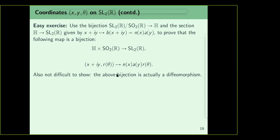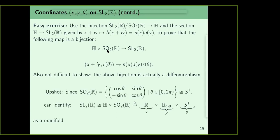This gives the Iwasawa decomposition for SL2(R): the map from H × SO2(R) to SL2(R) sending (x+iy, r(θ)) to N(x)A(y)r(θ) is a bijection, and in fact a diffeomorphism. Since SO2(R) ≅ S¹, we can identify SL2(R) with H × SO2(R), and since H = R × R^{>0}, we can identify SL2(R) with R × R^{>0} × S¹ — only as manifolds, not as groups. The coordinates (x, y, θ) correspond to N(x)A(y)r(θ).